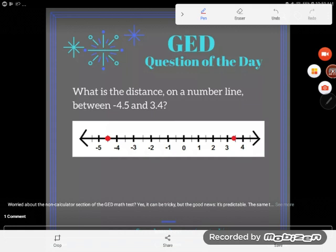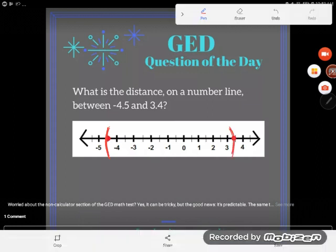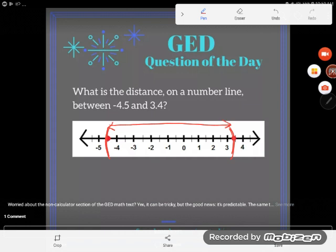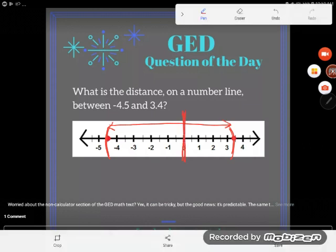So this is how I want to look at it. Would you agree with me that I have these two points: here at -4.5, shown in red right here, and this point over here at 3.4? If I'm talking about the distance between them, I'm talking about this entire space. What I want to do is break that space right at zero into two pieces. The distance between those two numbers consists of this piece and this piece.